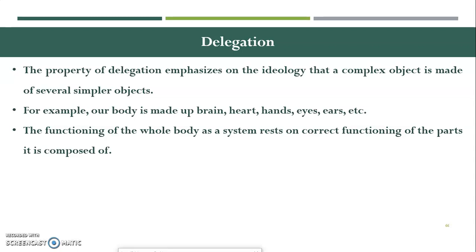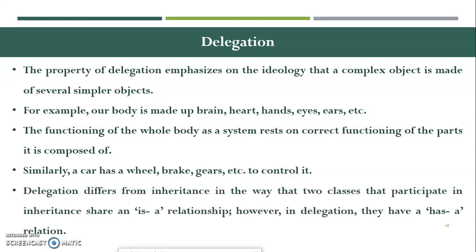When your delegates are working fine, you can be sure that your complete system is working fine. Similarly, a car has a wheel, brakes, gears etc. to control it. Delegation differs from inheritance in that two classes participating in inheritance share an is-a relationship, whereas in delegation they have a has-a relationship. So containership and delegation both have a has-a relationship, while inheritance has an is-a relationship.